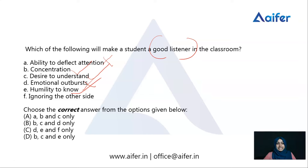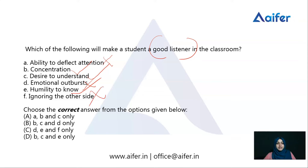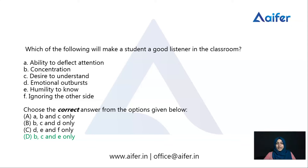Option F: Ignoring the other side. Is that a good quality for a good listener? No, it's a negative one. Ignoring the other side means not taking others' perspectives while communicating, so certainly that is not a feature to be possessed by a good listener and we can exclude this one. The remaining correct codes are B, C, and E, which makes option D correct. I hope you understood this question. Let's move to the next one.